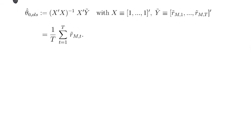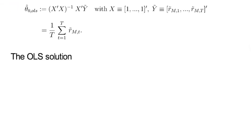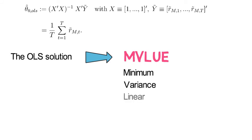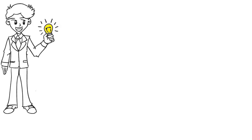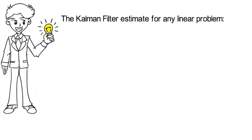Now, from OLS, it's known that the OLS solution is MVLUE, meaning it's the minimum variance linear unbiased estimator. The big learning point is, therefore, that the Kalman filter estimate for any linear problem will have three properties.